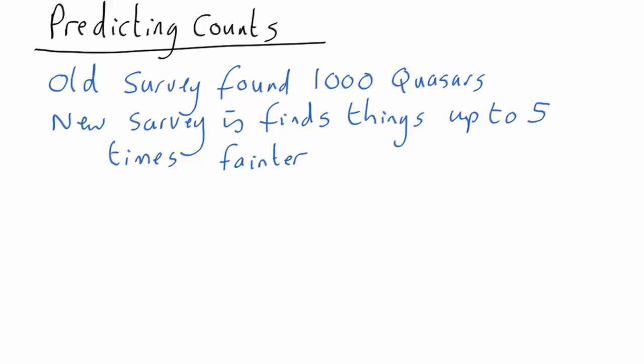In this worked example I'm going to show you how you calculate how many objects you will find in a survey. In this case let's imagine we've done a quasar survey and found a thousand quasars. We're going to do a new survey that will find quasars up to five times fainter than the original survey. How many quasars do we expect to see?